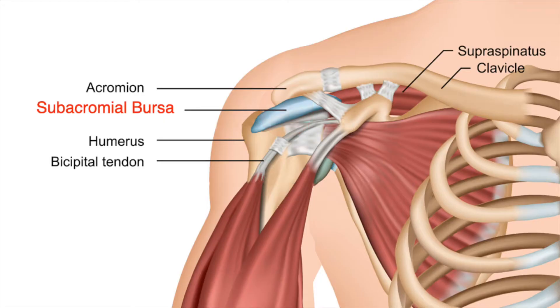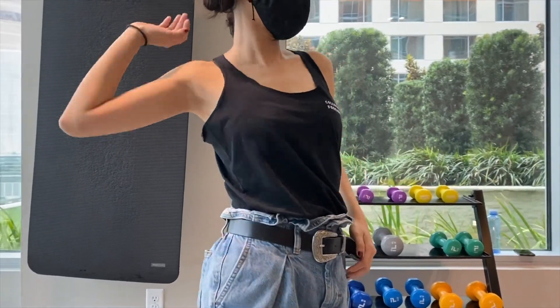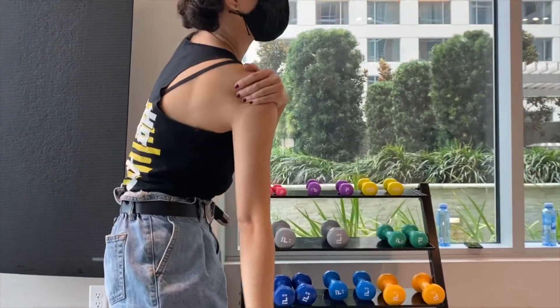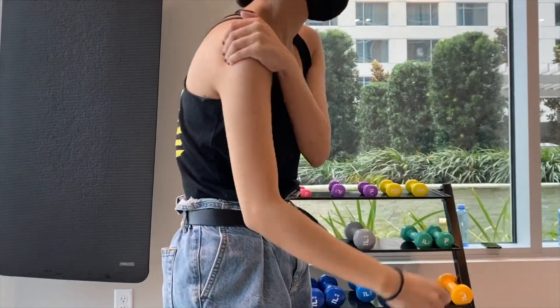The subacromial bursa is a fluid-filled sac that acts as a cushion between the acromion bone and the tendons of our shoulder. The subacromial bursa can be irritated from repetitive overhead motion of the shoulder. Symptoms can be triggered by tennis, swimming, or throwing a ball. It may also hurt when sleeping on the irritated side at night.